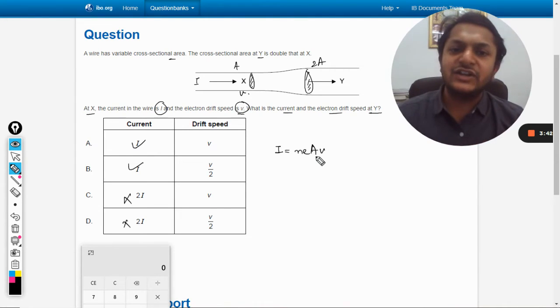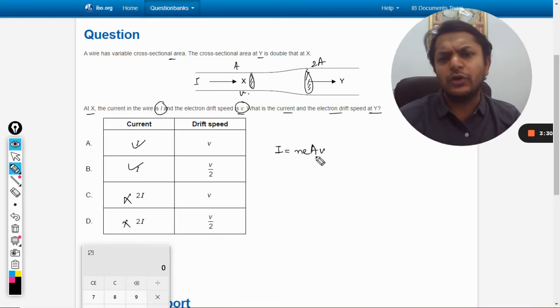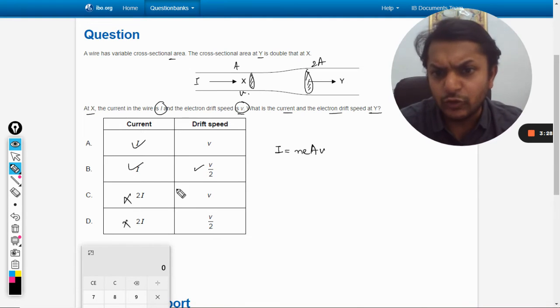Because the wire is made of the same material, the number of electrons per unit volume is same, e the charge on electron is same for both, current i will be same because that is a series combination, and there is a difference in A because the area is getting doubled. So velocity will be reciprocal of it, so definitely the answer will be v by 2.